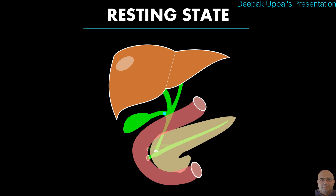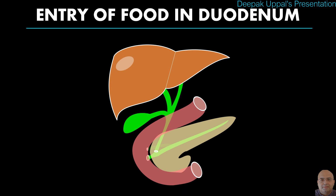In the first instance, bile produced by the liver gets stored and concentrated in the gallbladder. Pancreatic juice remains in the pancreatic acini. The sphincters of the duct system remain closed.